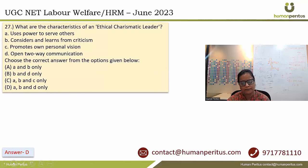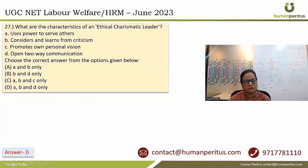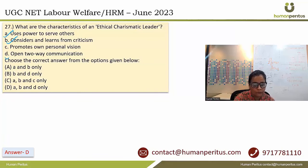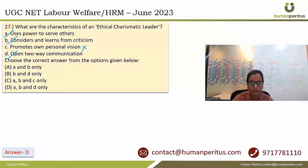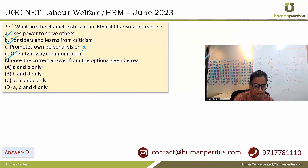What are the characteristics of an ethical charismatic leader? He uses power to serve others, considers and learns from criticism, and is open to two-way communication. However, he does not pursue his own personal interest. So C is not related to the characteristics of an ethical charismatic leader. The answer is option D — that is A, B and D.